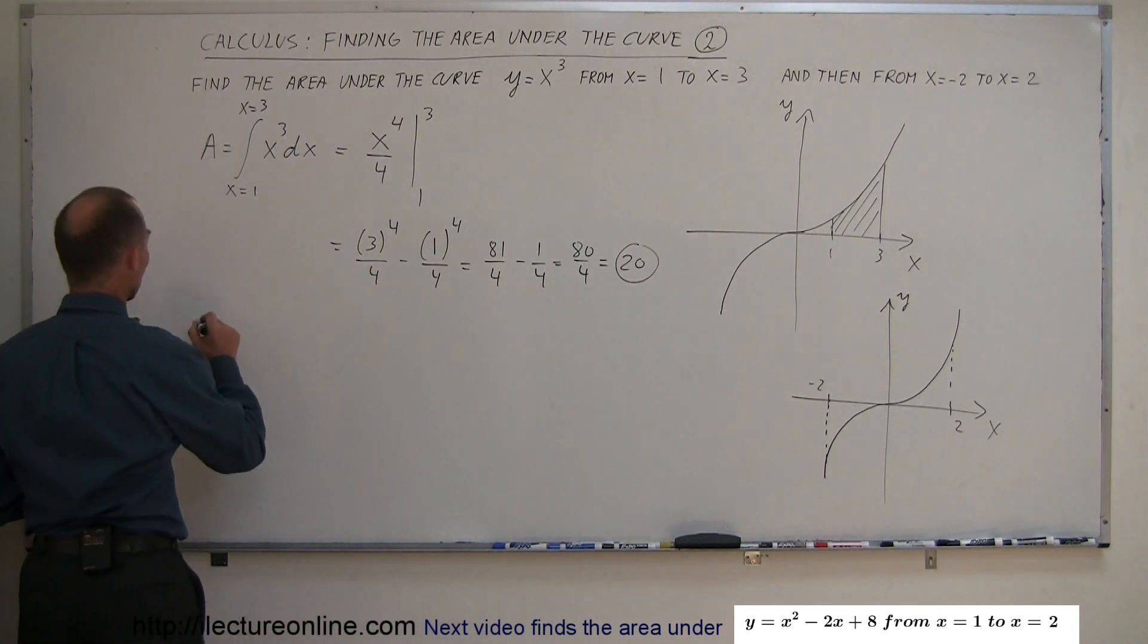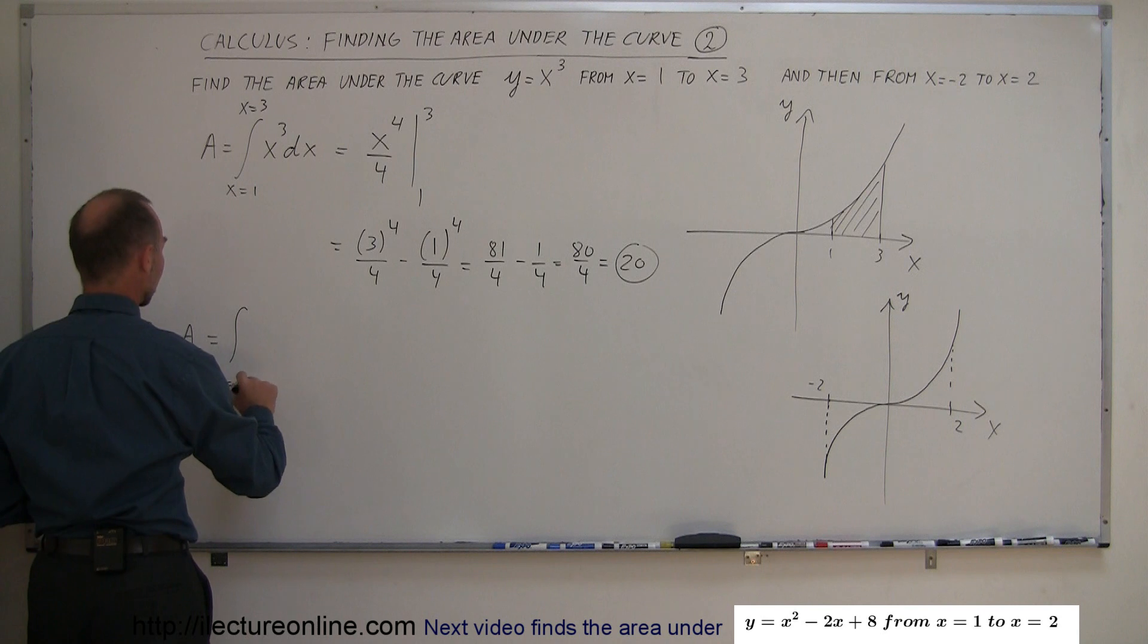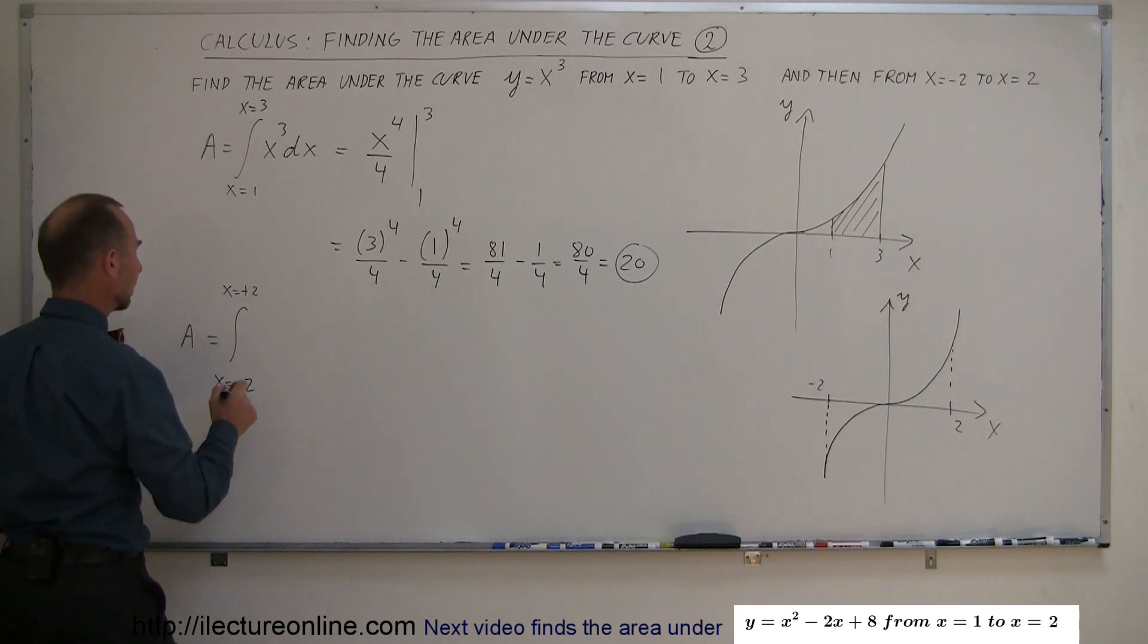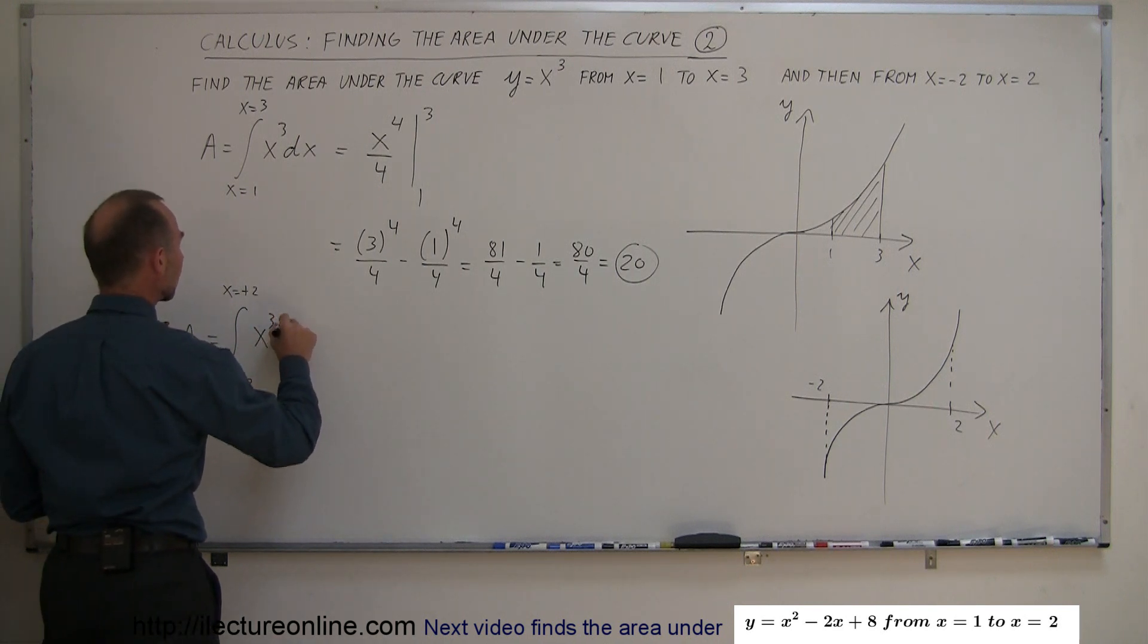Let's try that. We're going to find the area when the limits are from x equals minus 2 to x equals positive 2. I did write x equals just for clarity, of x cubed dx.